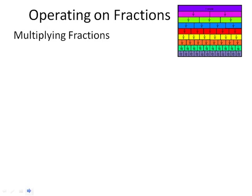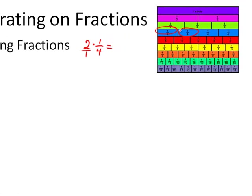One thing we can do with fractions is multiply them. So let's say you wanted to go 2 times a quarter. You can take a quarter twice, and that actually gives you 2 over 1 times 1 over 4. That's 2 times 1 — 2 groups of 1 — and then 1 times 4, giving you 4. Now that can actually simplify by dividing the numerator and the denominator by 2, giving you 1 half. And you'll notice 2 quarters is the same as 1 half.